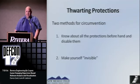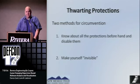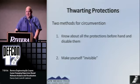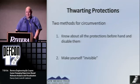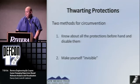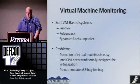All this is very annoying for the reverser. There are basically two methods for circumvention. First, you can know about all the possible protections and play the cat-and-mouse game of trying to remove them. Or you can make yourself invisible. The second approach is a lot less work, and being a good grad student, I chose the lazy way.